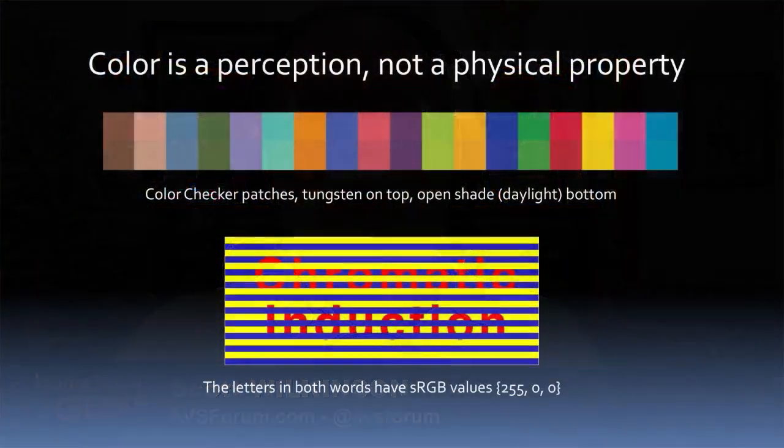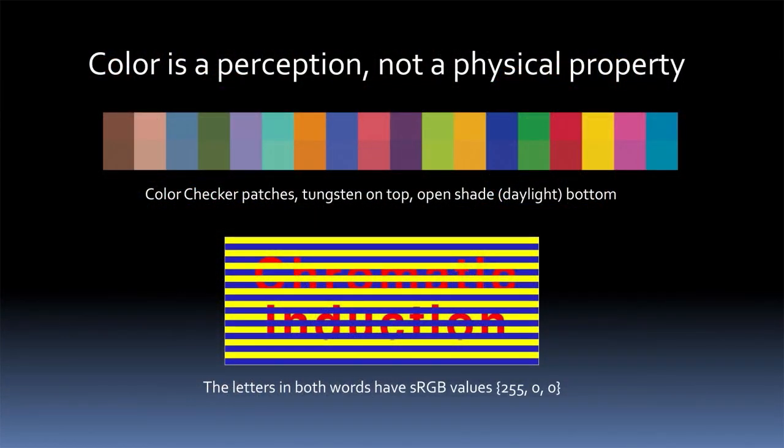Because obviously, what we end up experiencing is based upon what the input is, the stimulus if you will, but also how our brain processes things. So I would love to take a look at graphic number one and have you explain a little bit about what we're looking at here.